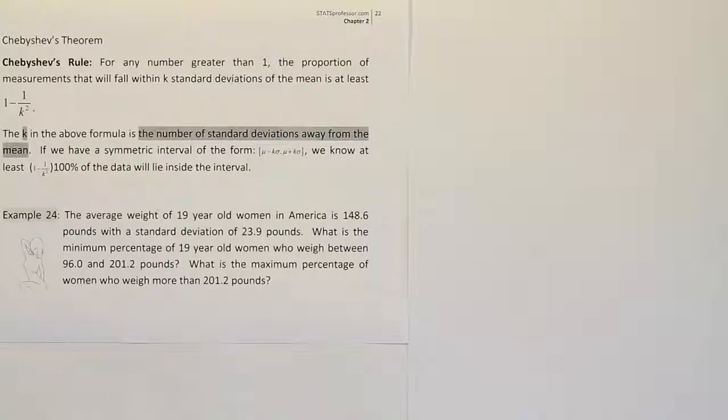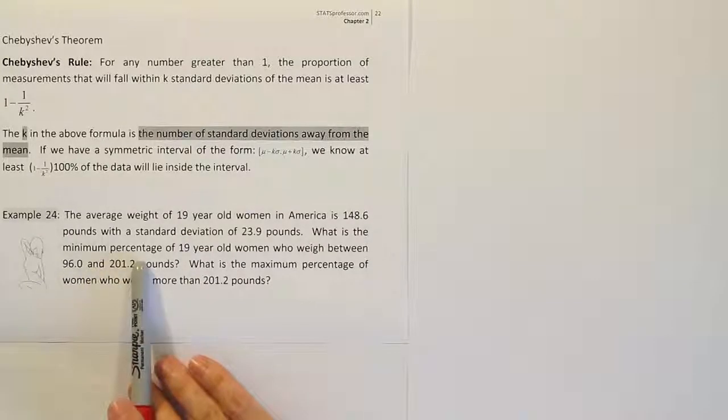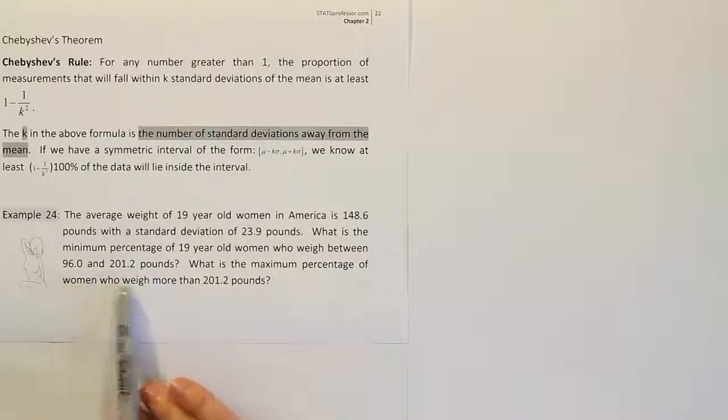So our first step is going to be, hey, let's find out if this interval is symmetric around the mean. If it is, then we should be able to use Chebyshev's rule to answer the question, what's the minimum percentage of data that's in between these two numbers?